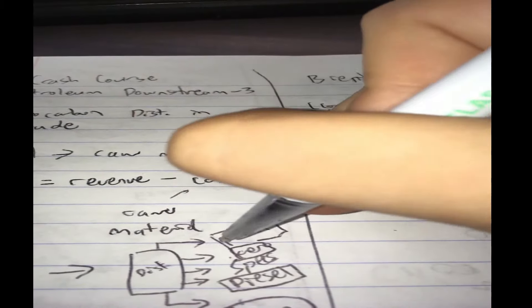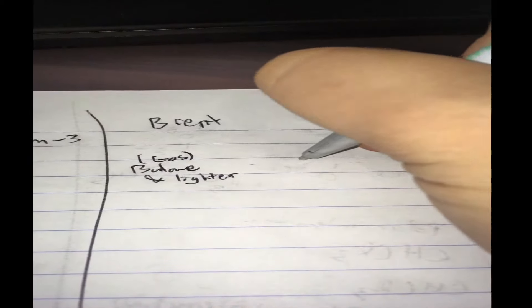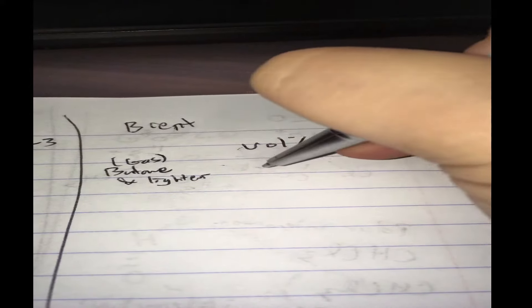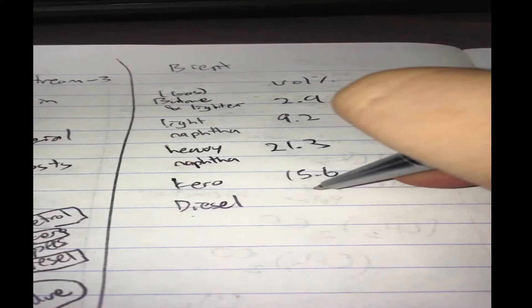All the stuff here. The topmost product is usually gas. Butanes, let's have a volume percent. So for every hundred gallons of oil I throw into the refinery, 2.9 will come out as gases. Light naphtha, this is stuff you can actually use to mix and match into gasoline, 9.2%. Heavy naphtha, this is the heavier part of the gasoline because gasoline is a mixture of hydrocarbons. This is the light part and this is the heavy part, 21.3%. Next one, kerosene, 15.6%. Diesel or gas oil, 16.7%.